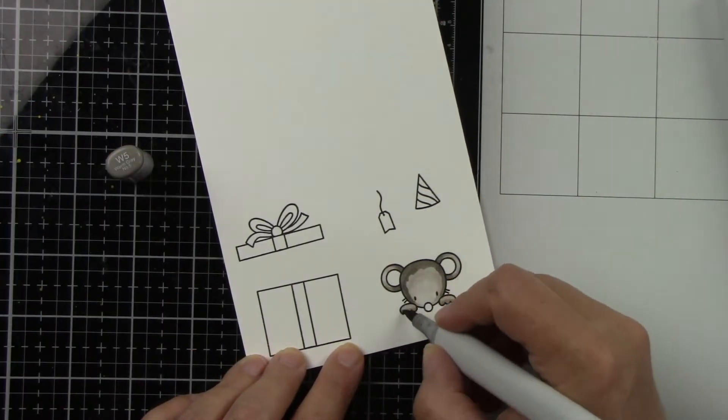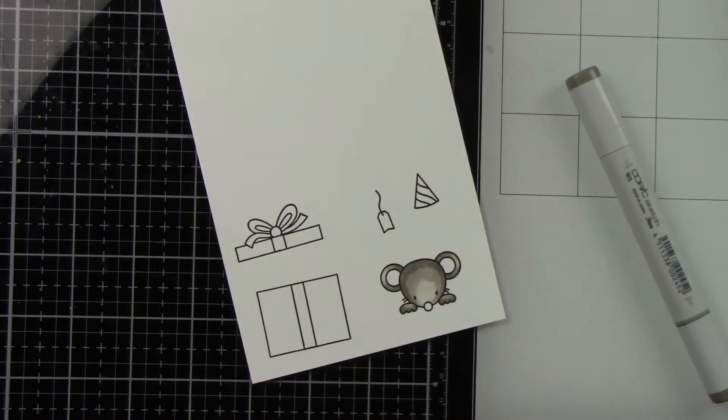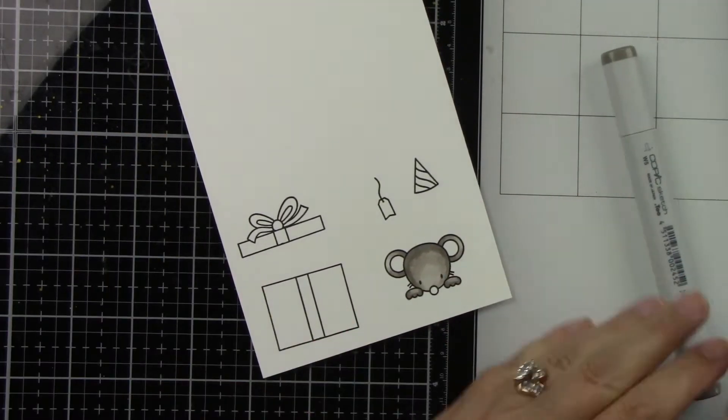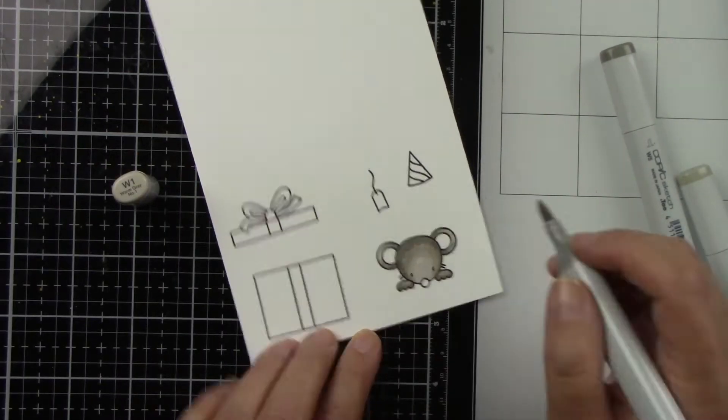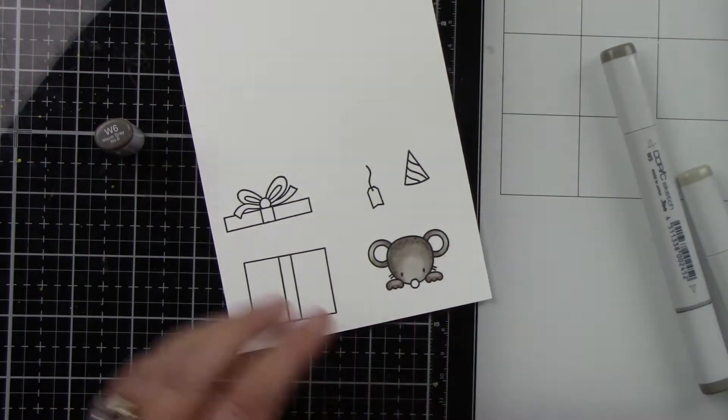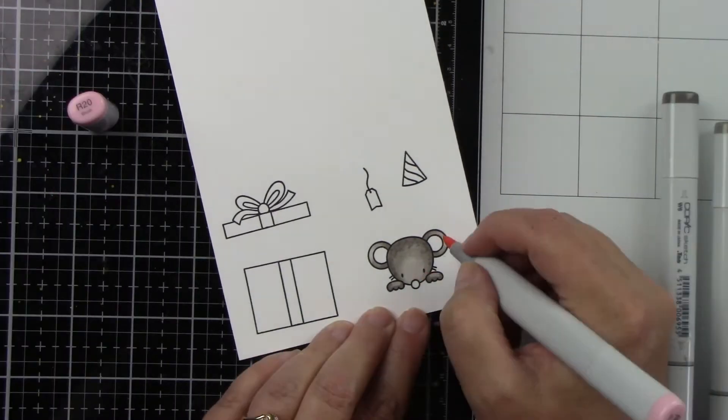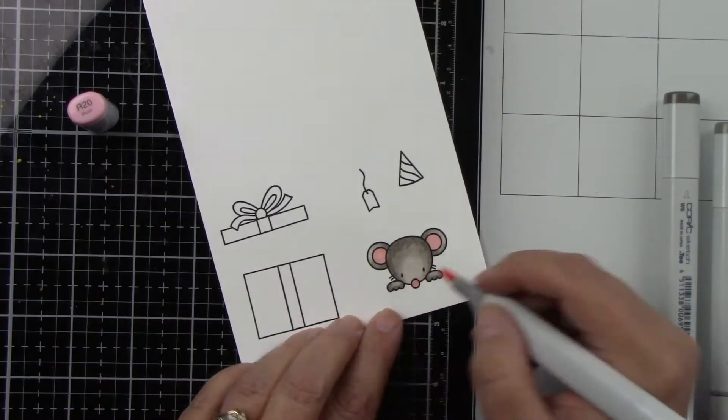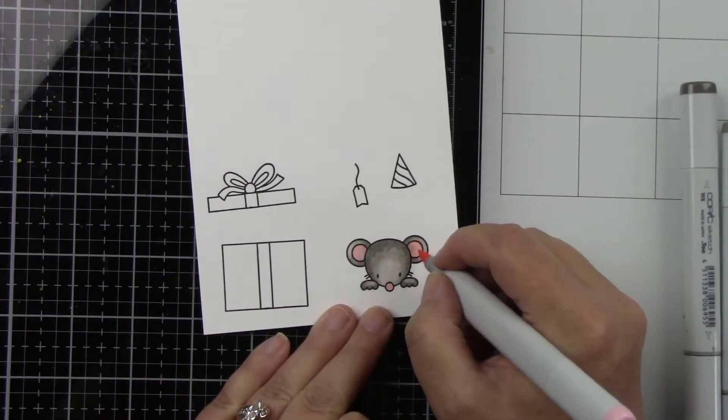This is part of a blog hop collaboration with Possum Stamps and Heffy Doodle. Head on over to my blog, listed and linked below in the description. Also listed are the products I used. They are doing a giveaway from each company. There's also the list of the next people you want to hop along to.